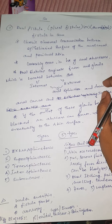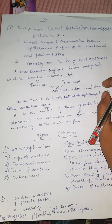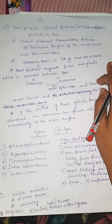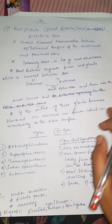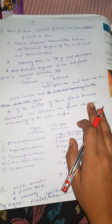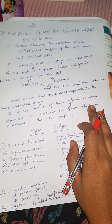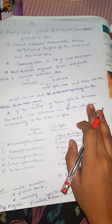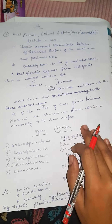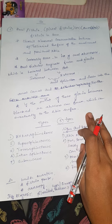It commonly occurs with a history of anal abscess. Anal fistula originates from glands located between the internal and external anal sphincter and drain into the anal canal. If the outlet of these glands becomes blocked, an abscess can form which eventually tracks to the skin surface.